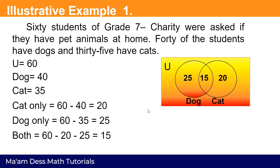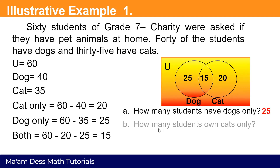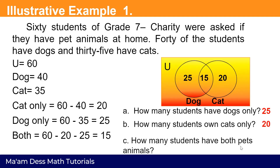Now let us answer the questions. A: How many students have dogs only? From the Venn diagram, we have 25. B: How many students own cats only? On the right part of the circle, we have 20. C: How many students have both pets? For the intersection, we have 15.